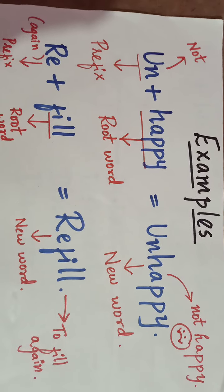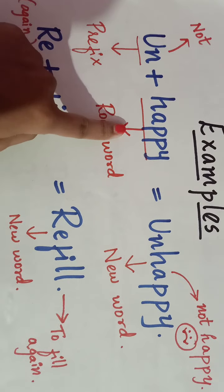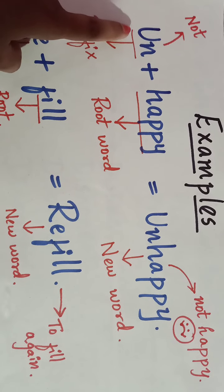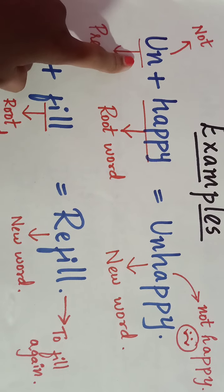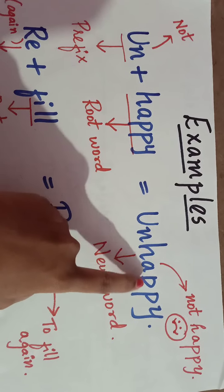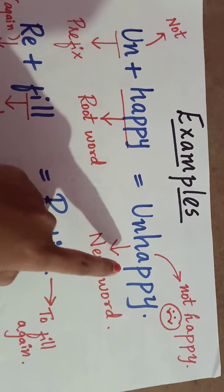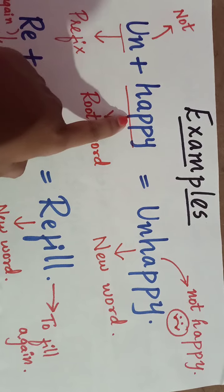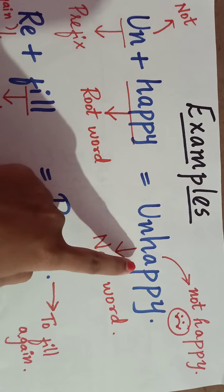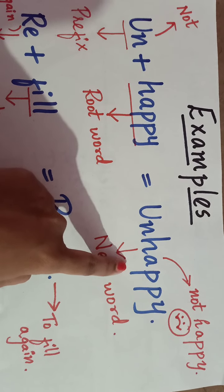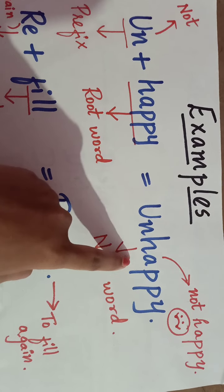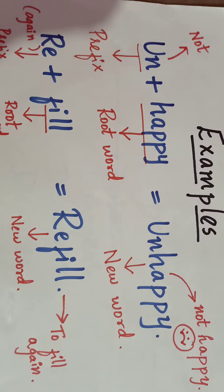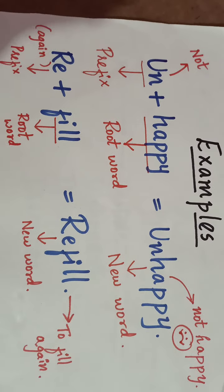So 'happy' is your root word, 'un' is your prefix, and the new word is 'unhappy'. 'Unhappy' means not happy — the meaning has changed. This is called a prefix.